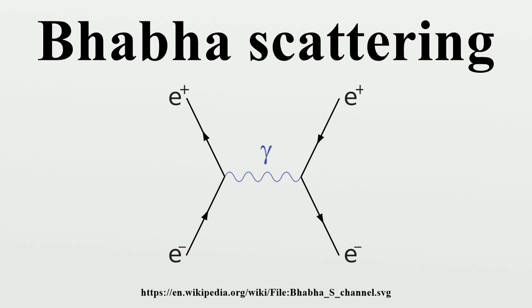Annihilation term: The process for finding the annihilation term is similar to the above. Since the two diagrams are related by crossing symmetry and the initial and final state particles are the same, it is sufficient to permute the momenta.